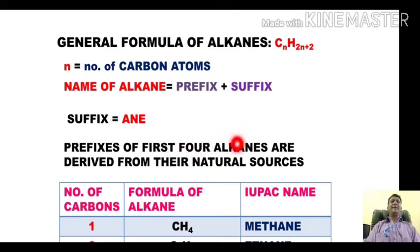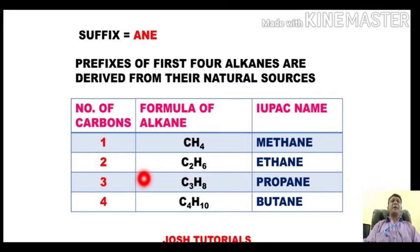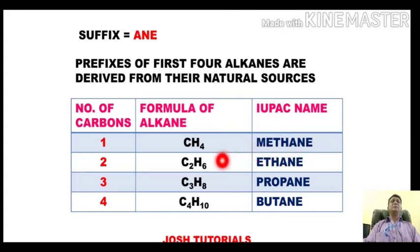For naming alkanes, we use a combination of prefix and suffix. In all cases, the suffix is '-ane', taken from alkane. The prefixes for the first four alkanes are derived from their natural sources. For n=1, the formula is CH4 and we call this alkane methane, where 'meth-' is a prefix taken from 'marsh gas', as CH4 occurs naturally as marsh gas.